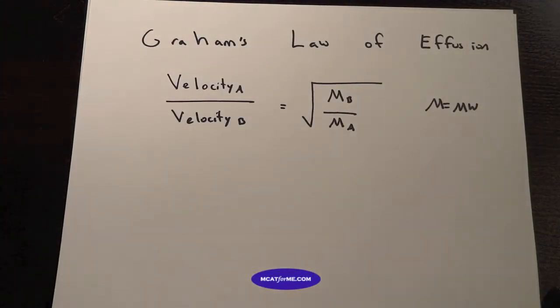So it's Graham's law of effusion, and what it says is that velocity of A over velocity of B equals the square root of MB over MA.